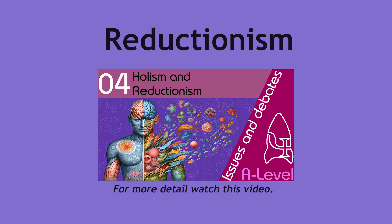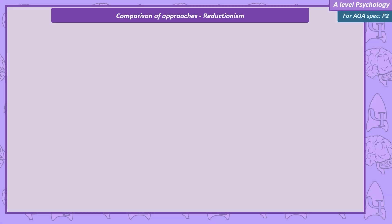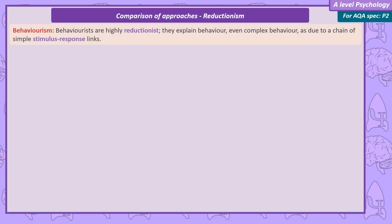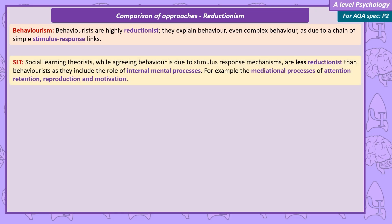Reductionism. Behaviourists are highly reductive, explaining behaviour — even complex behaviour — as due to a chain of simple stimulus-response links. Social learning theorists, while agreeing behaviour is due to stimulus-response mechanisms, are less reductionist than behaviourists as they include the role of internal mental processes — for example, the mediational processes of attention, retention, reproduction, and motivation.